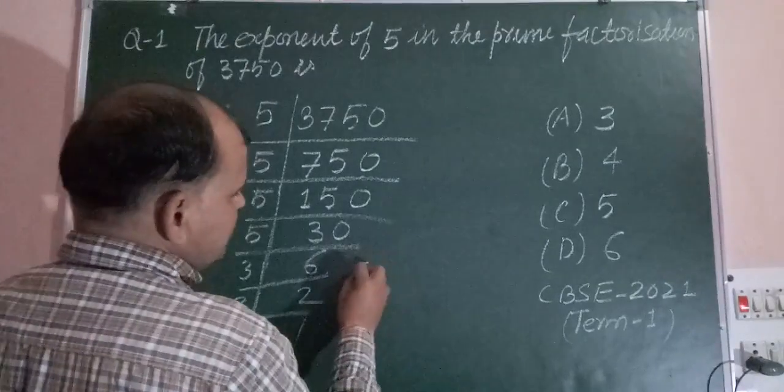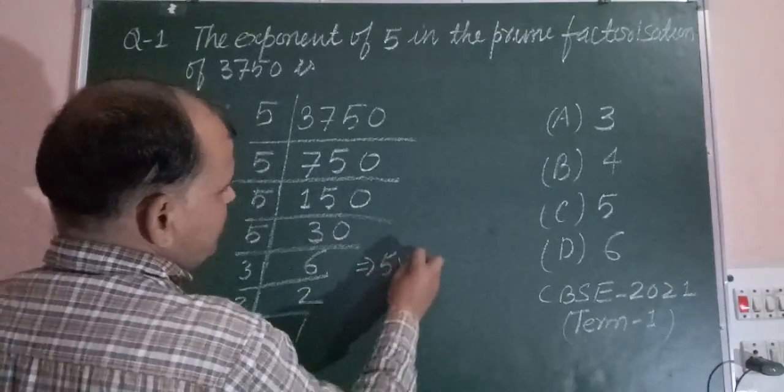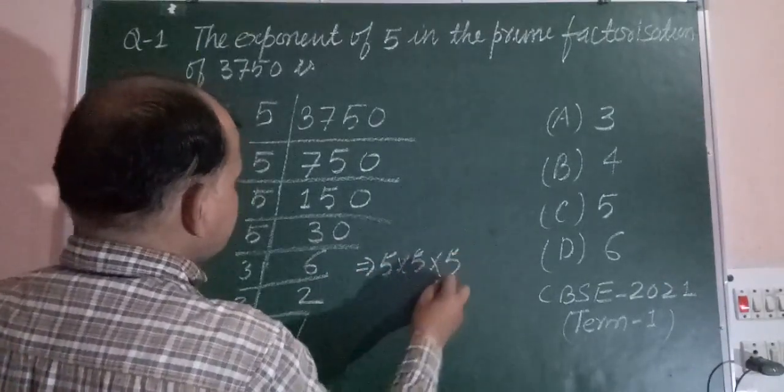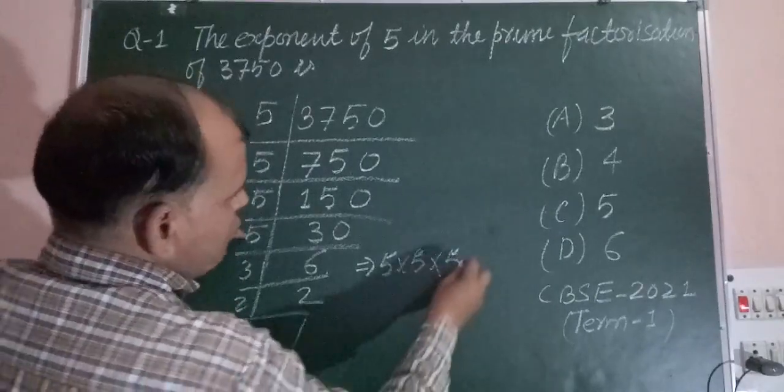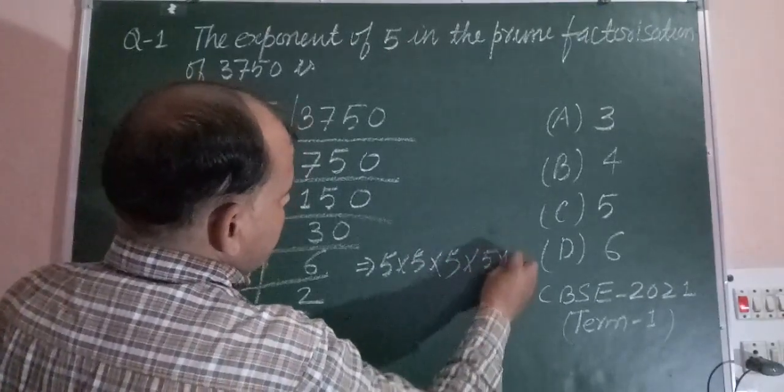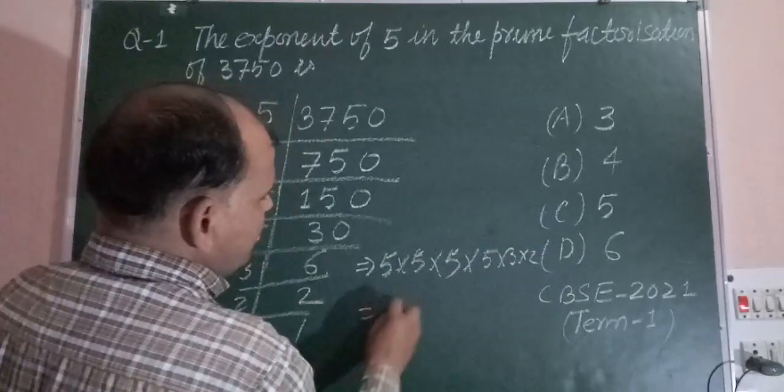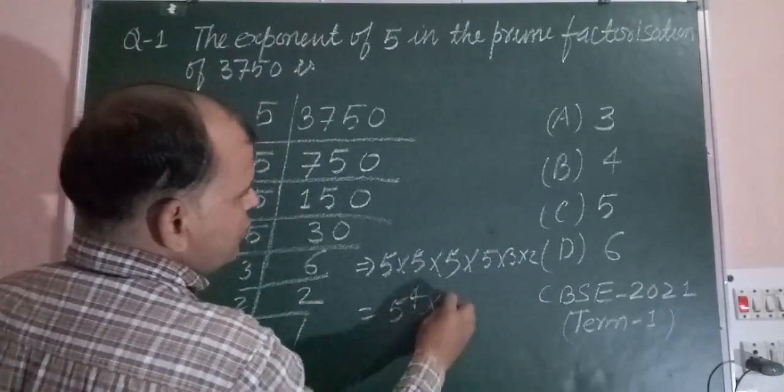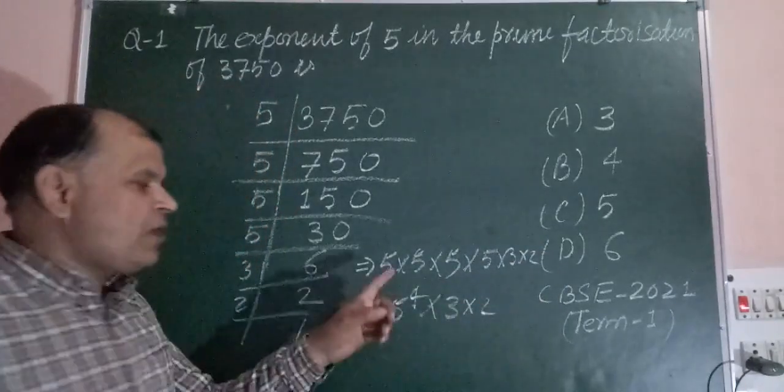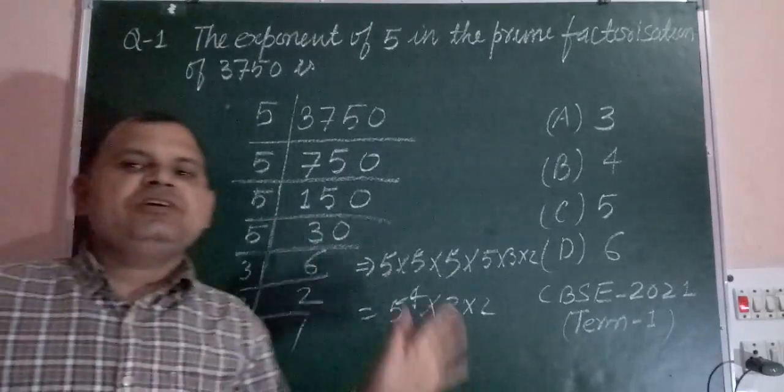So prime factorization of this: 5 into 5 into 5, 1, 2, 3, 4, into 5. 3 into 2. So therefore 5 to the power 4 into 3 into 2.